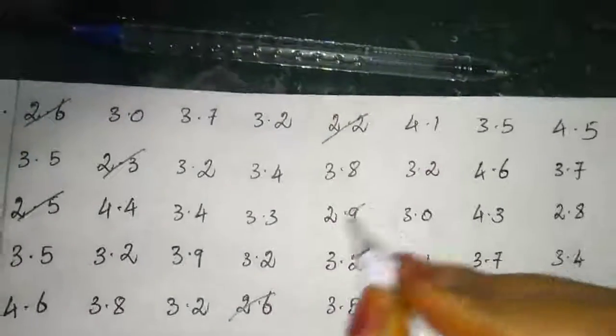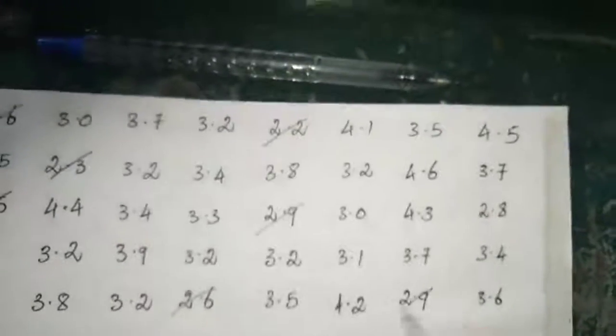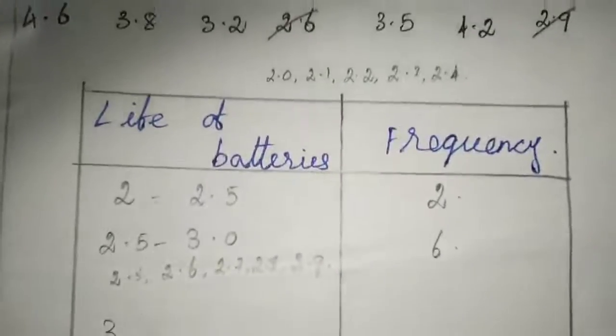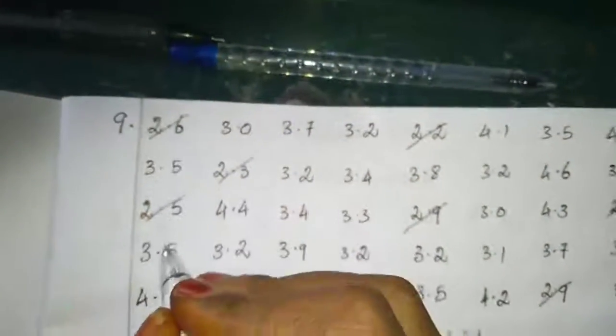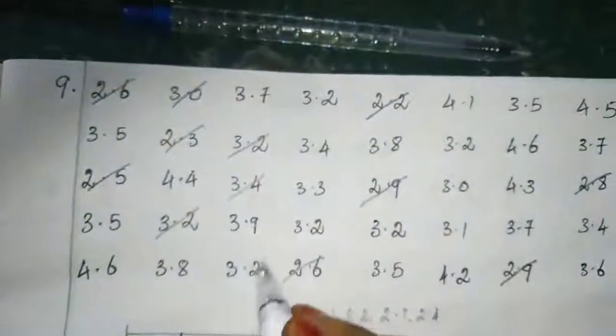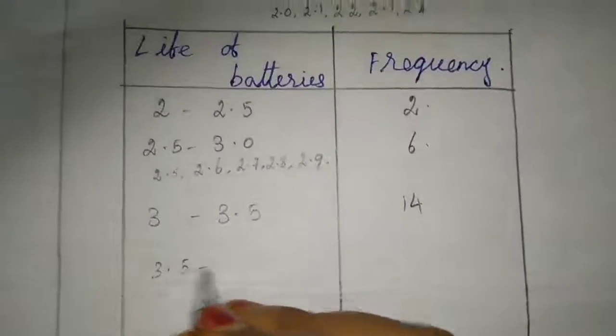Next one is 3 to 3.5. See, 3.5 will not be included. Counting through the data, we have 14.